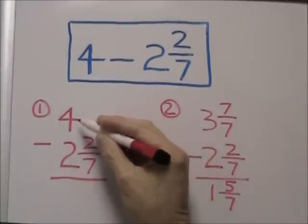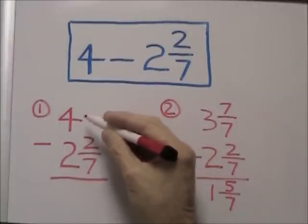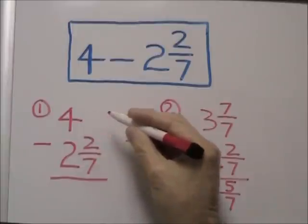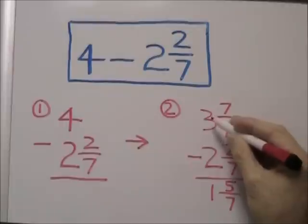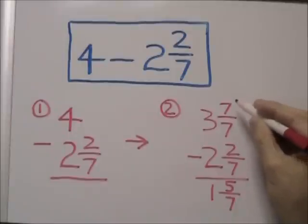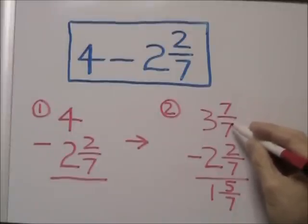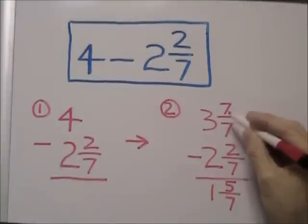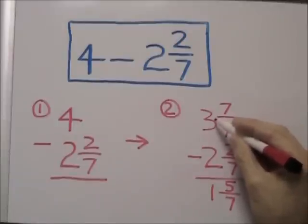So what we're going to do is take this 4 and change it into the mixed number format. To do this, it becomes 3 and 7 sevenths. We both know that if we have the same numerator and the same denominator, this equals a value of 1. We take this value of 1 and add it to 3 and we get 4.